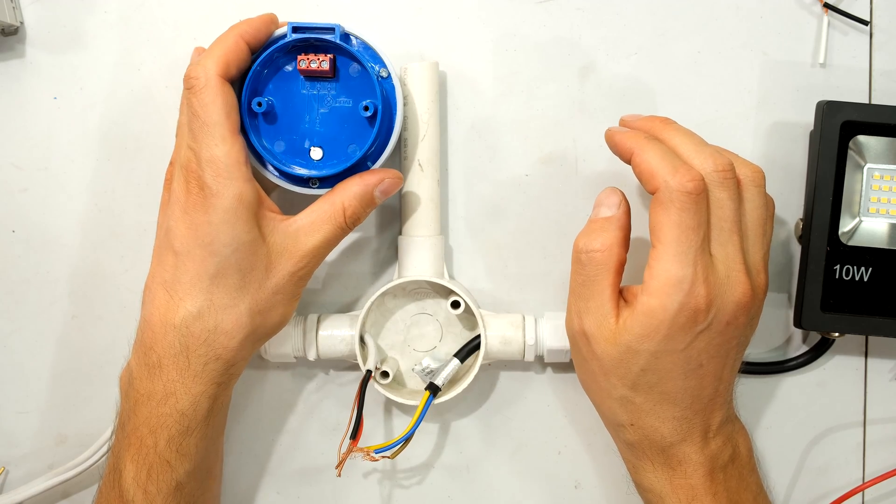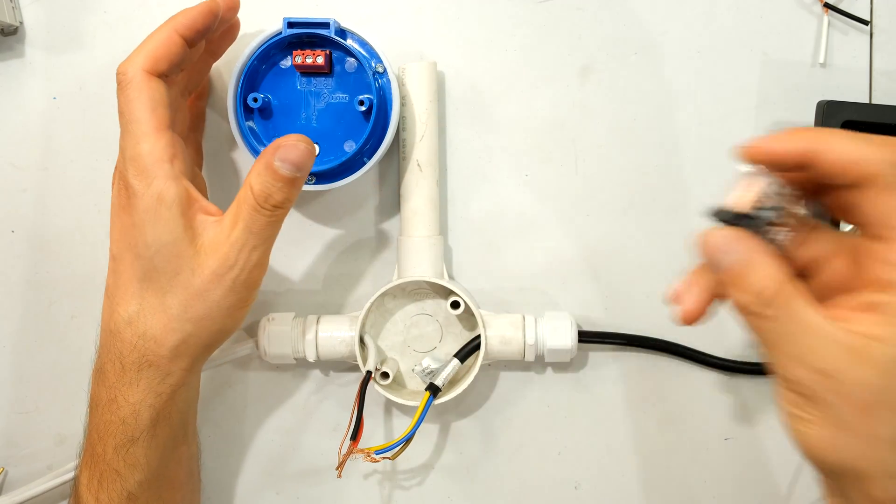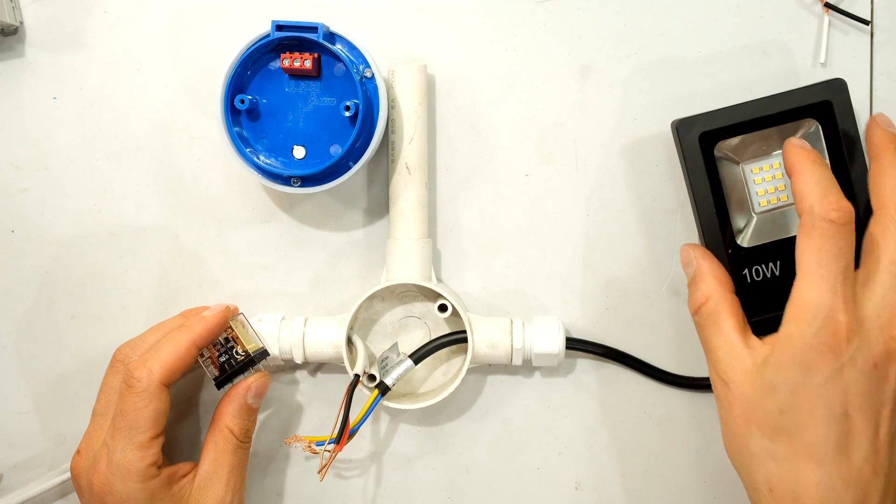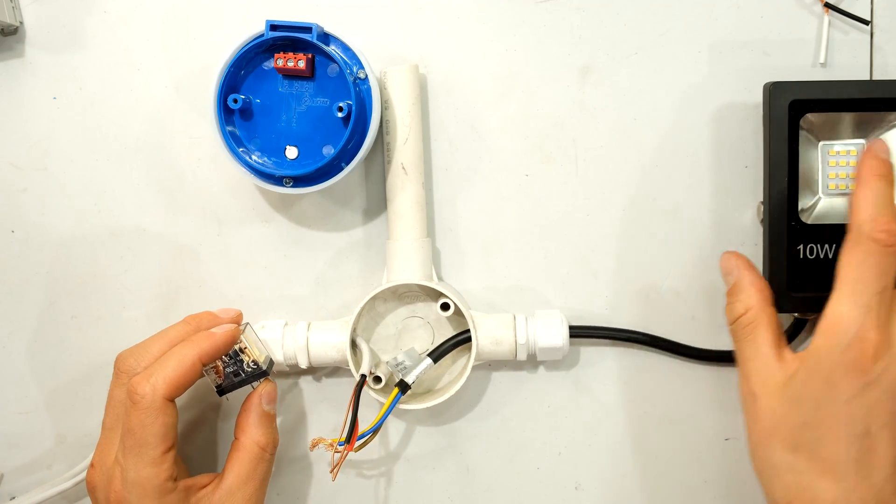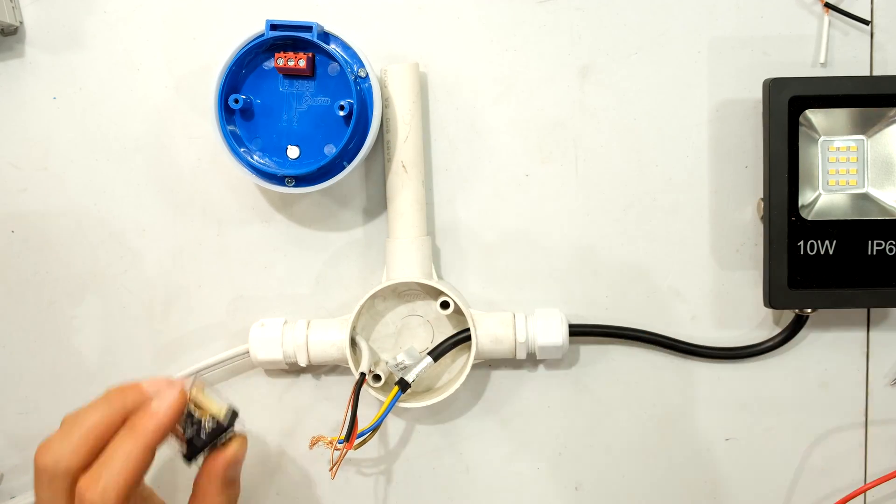That will give the day-night switch power. But the day-night switch has a little relay inside. And that is going to switch the load, the light on or off. So it also needs a live wire going to the light.